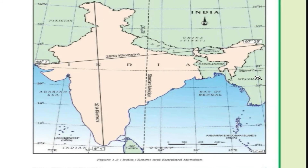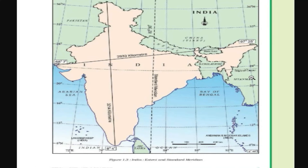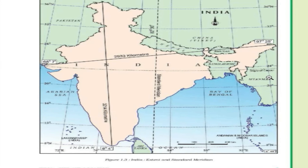If we talk about the total area, India covers 3.28 million square kilometers of geographical area, which is about 2.4% of the world's total area. India is the 7th largest country in the world in terms of area.